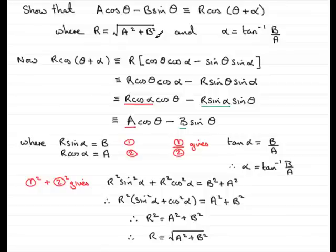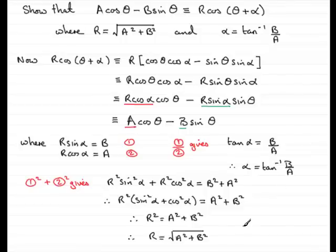So r equals the square root of a² + b², and α equals the inverse tan of b over a. I'd encourage you to learn this identity and the values of r and α — it will save you having to work through all of this each time. That brings us to the end of this tutorial.